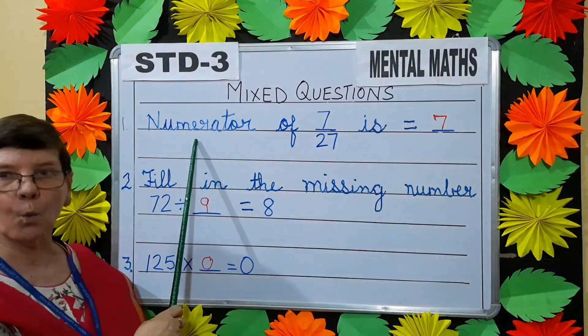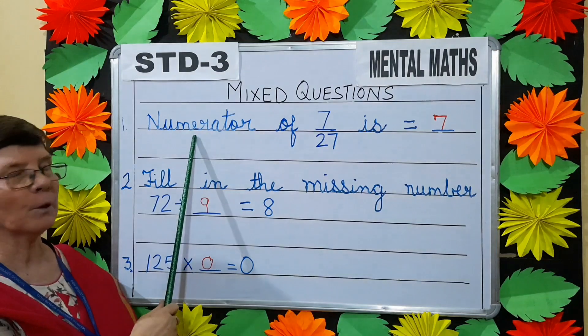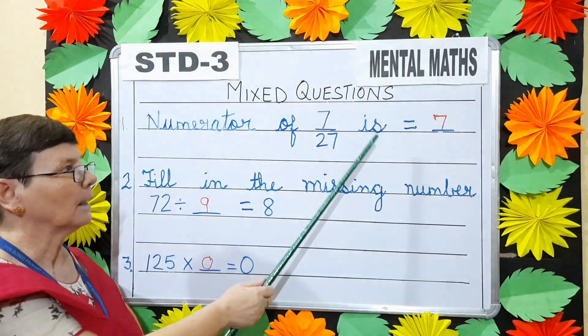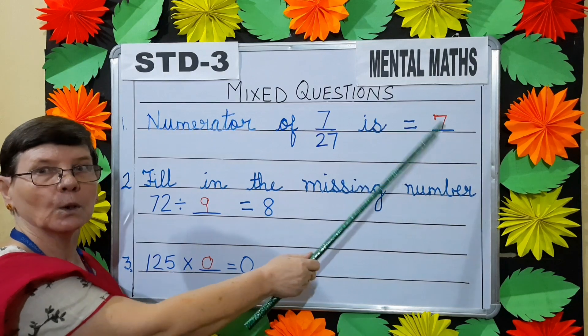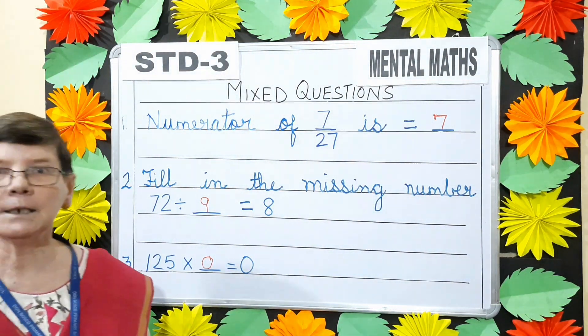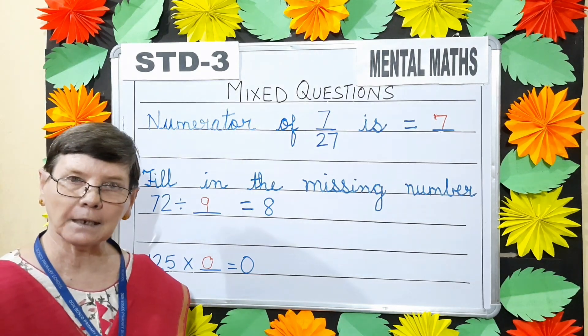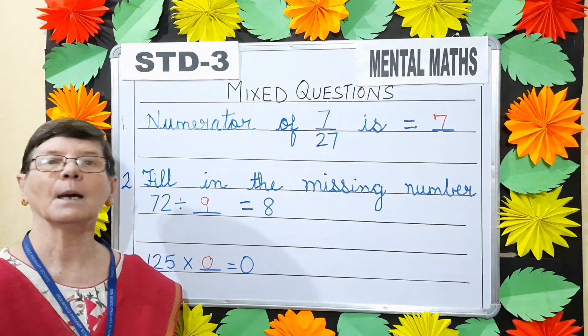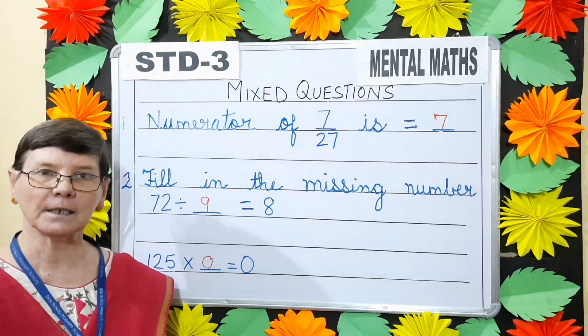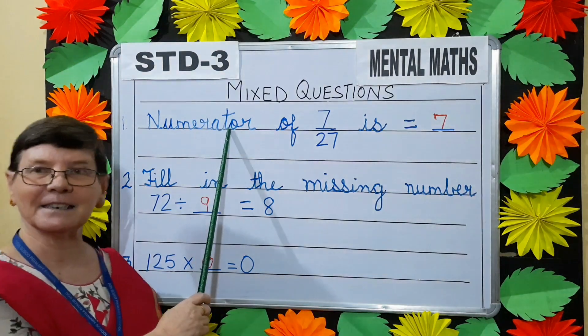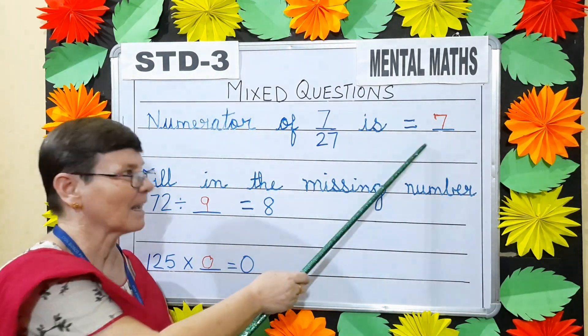Question number 1. Numerator of 7 by 27 is equals to dash. Now in fraction children, the number above the line is called numerator, and the number below the line is called the denominator. So the numerator here is 7. Correct.